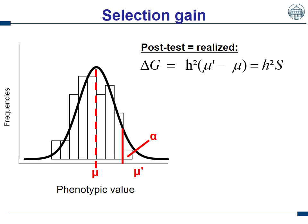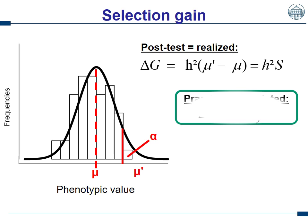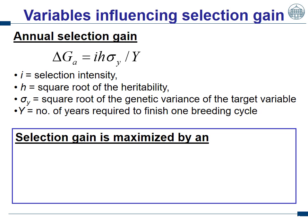However, this is a post-test selection gain, and we first have to bring them to the field and evaluate them. This doesn't help me when I must know, as a responsible breeder, before I put field trials in the field, which is the best strategy. Thus, we need a pretest scenario where we predict the genetic selection gain. This is done by the well-known breeder's equation.